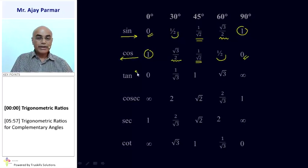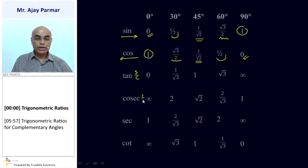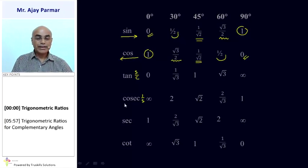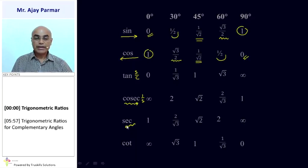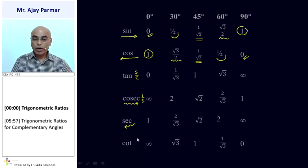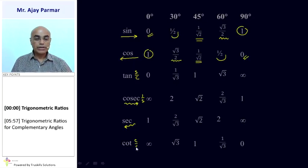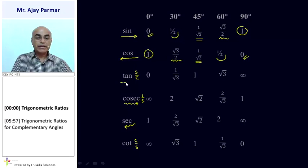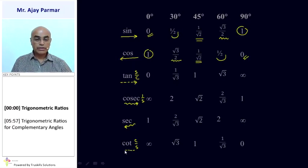Tan can be written as sin upon cos. Cosec can be written as 1 upon sin. If cosec is written in one order, then sec would be written in exactly the opposite order. Cot can be remembered as cos upon sin — or if tan is written in one order, then the reverse order gives us the value of cot.